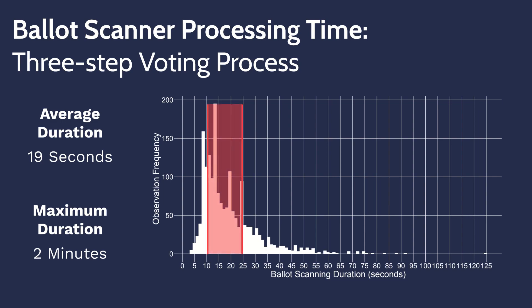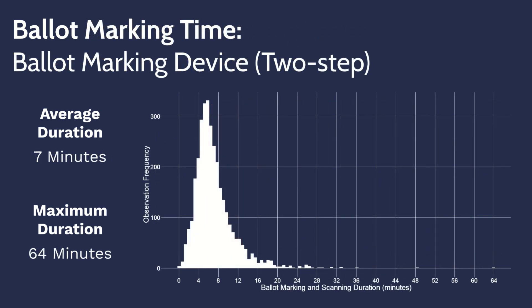With the two-step process, ballot marking and ballot scanning are combined in a single step through the use of a ballot marking device. Using the ballot marking device to mark and cast a ballot takes voters seven minutes on average, but can take a maximum of more than an hour. A distribution chart shows the majority of voters taking between four and a half and eight and a half minutes to use the device.